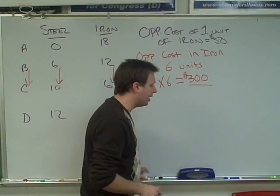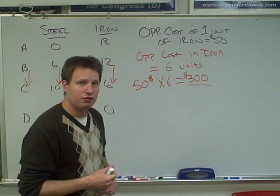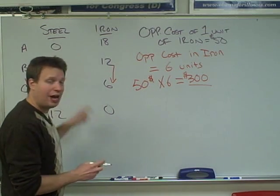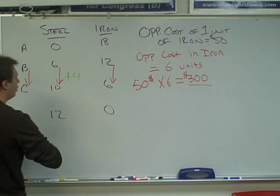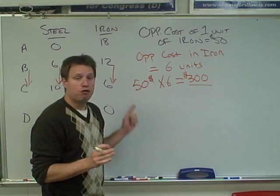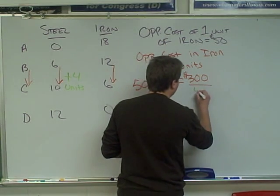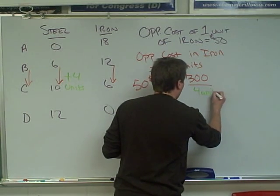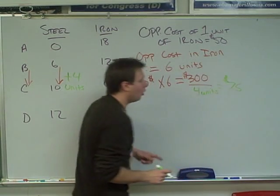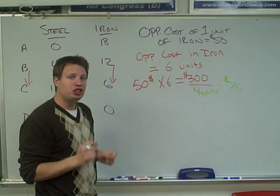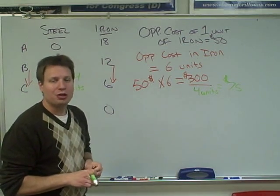The next thing we want to know is how much are we going to have to charge for this new steel that we're producing? The question is how many more units of steel are we producing? We're going from 6 to 10, so we are plus 4 units. For these 4 units that we are going to sell, we need to get $300. So you take the $300 and divide it by the 4 units of steel. $300 divided by 4 equals $75. So in order for the company to make the same profit — to break even — they have to charge at least $75 for each new unit of steel. And that's how you answer the second part of this question.